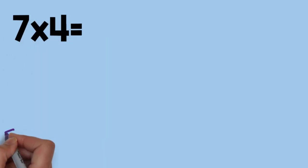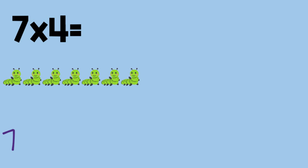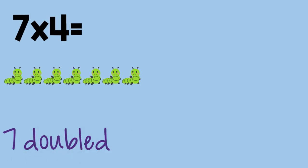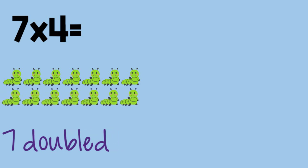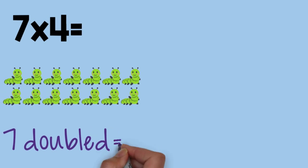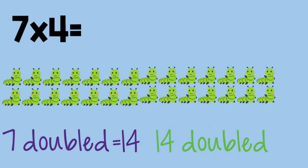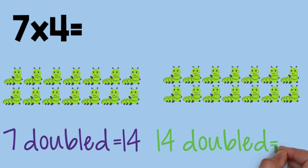Seven times four. Seven, doubled, is fourteen. Fourteen, doubled, is twenty-eight. So seven times four equals twenty-eight.